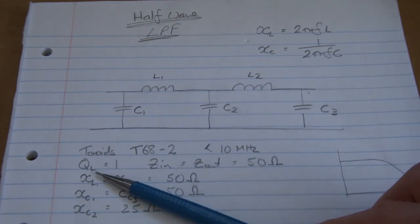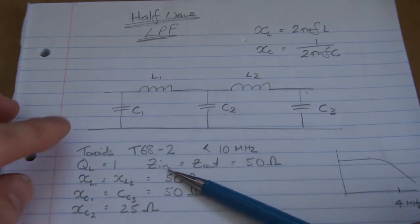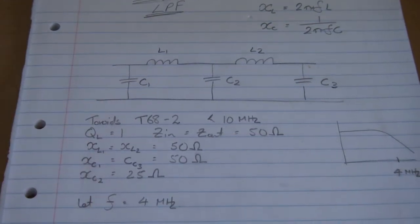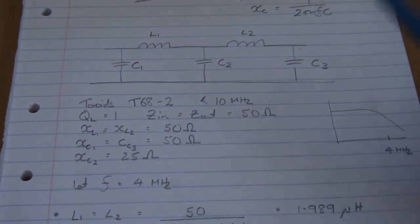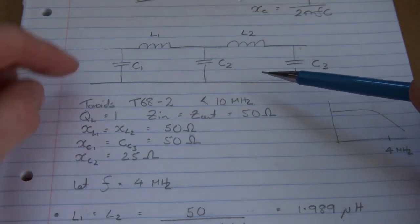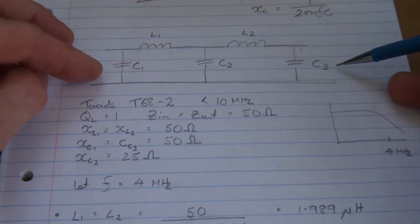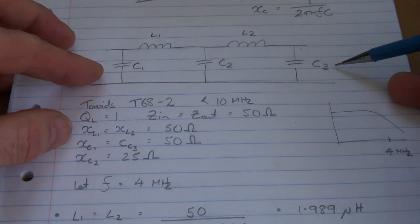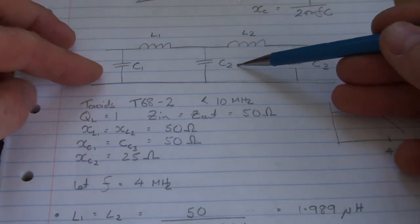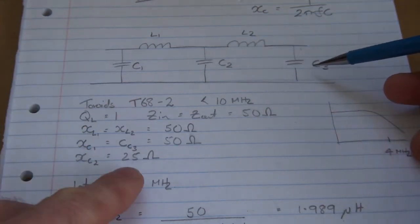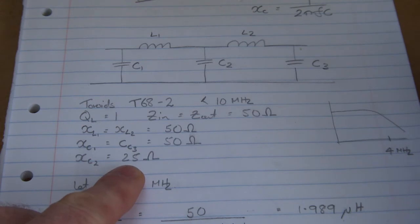It'll have a QL, a loaded Q of 1. Our Z-in and our Z-out will be 50 ohms. And our design parameters for this particular type of filter here is the inductive reactance for L1 and L2 are the same, and they equal 50 ohms. The capacitive reactance for C1 and C3 are the same, and that's also 50 ohms. And our capacitive reactance for C2 is half that, so twice the capacitance, so therefore half the reactance will be 25 ohms.